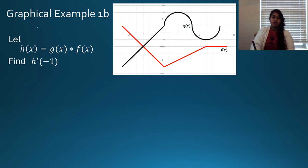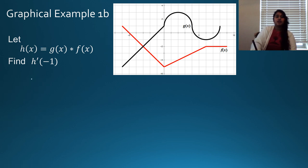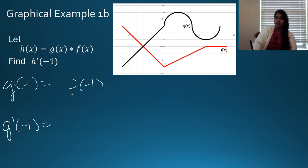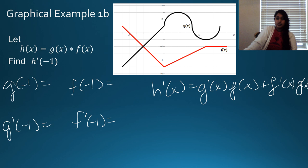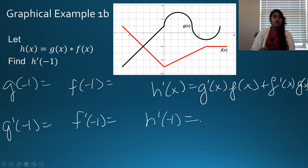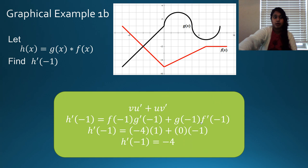Here's another one. Pause and do this problem yourself. Identify g of negative 1, g prime of negative 1, f of negative 1, and f prime of negative 1. Then use the same product rule equation to find h prime of negative 1. Take a moment, pause the video, solve it. Here's your answer — I hope you got the same.